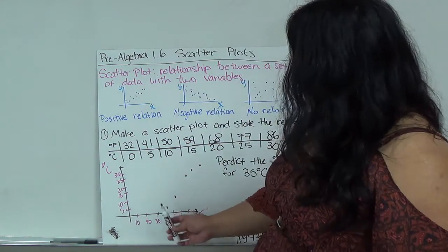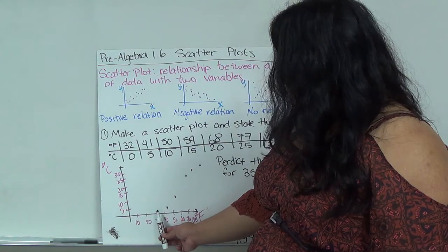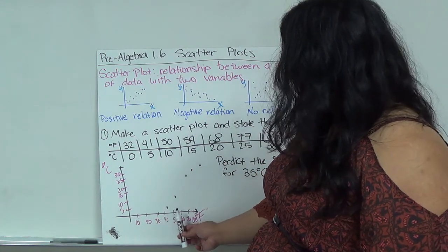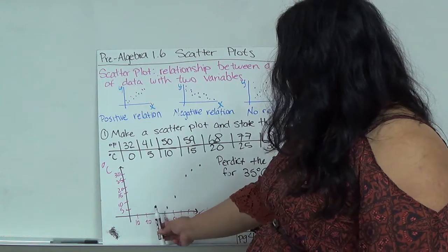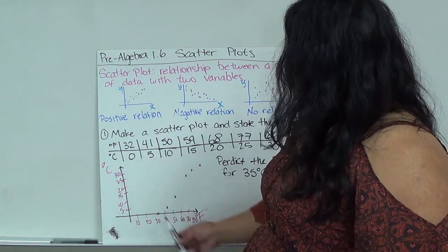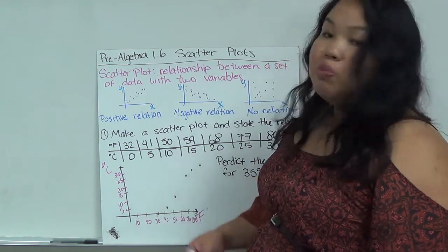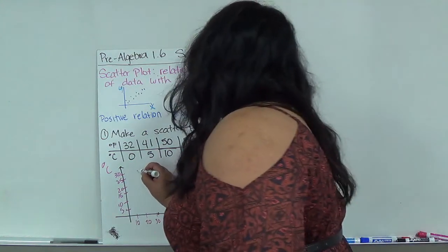But I can generally see as the X value or the F degrees gets bigger so does the C, so it's positive correlation. As one gets bigger so does the other, so this is positive.